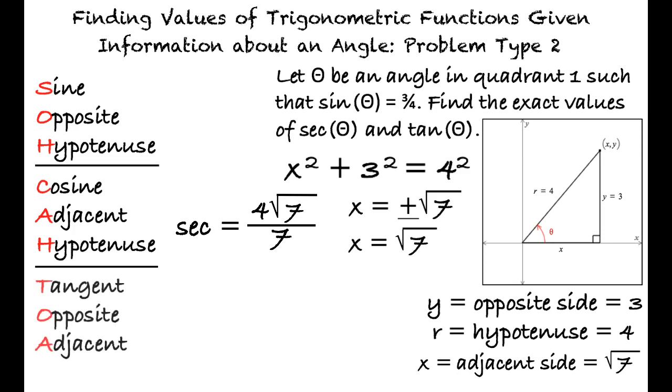And tangent of theta equals the opposite side over the adjacent side, which simplifies to 3 times the square root of 7 over 7.